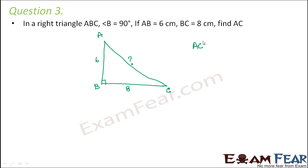Now by Pythagoras theorem, we know that AC squared is equal to AB squared plus BC squared. So AB is given as 6, so 6 squared plus BC is 8, so 8 squared. So 6 is 36, 8 is 64, so this is equal to 100. So AC squared is equal to 100.